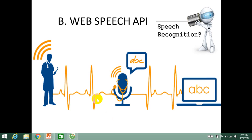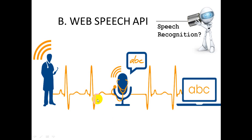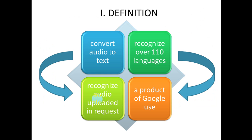Another breakthrough of Web 2.0 tools which is useful for teaching pronunciation is the Web Speech API. To know how to use this tool and embed it in English pronunciation instruction, I will identify its definition. Speech API enables developers to convert audio to text by applying powerful neural network models in an easy-to-use API. Powered by machine learning, API users can apply advanced deep learning neural networks to their audio for speech recognition with unparalleled accuracy. The API recognizes over 110 languages and variants to support your global user base.